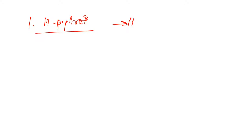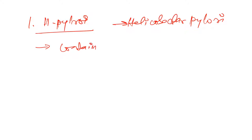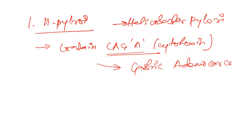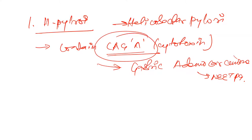First we will talk about the bacteria H. pylori — Helicobacter pylori. How does it cause cancer? It contains something known as CagA, which is a cytotoxin — a toxin which harms the cell. H. pylori contains CagA which causes gastric adenocarcinoma. This is an MCQ that has come in NEET PG before, so we have to remember this.